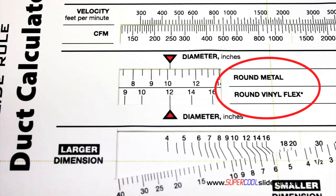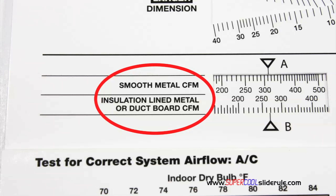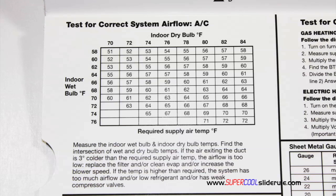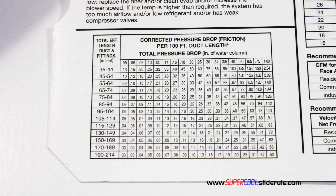Inside is packed with even more information. It performs sizing of both metal and flexible duct, and has the only direct reading conversion from smooth metal to insulation-lined metal we've ever seen. The majority of technicians have never been taught that if the insulation is on the inside of the ductwork, you cannot size it with a regular duct calculator. It has step-by-step directions for determining airflow through a gas furnace, electric furnace, or an air conditioning unit, as well as pressure drop multipliers for ductwork and recommended velocities.